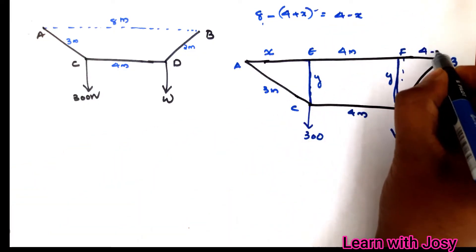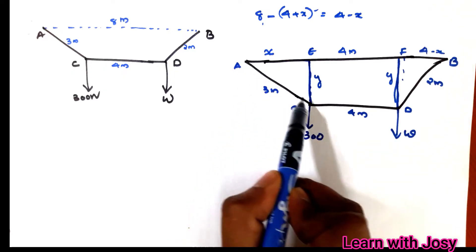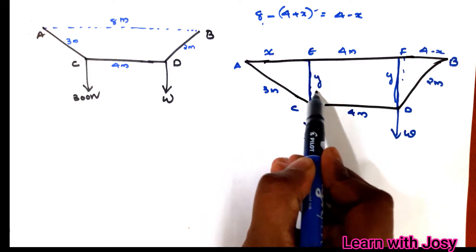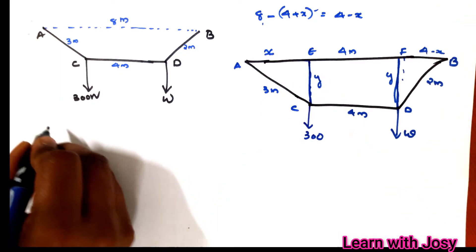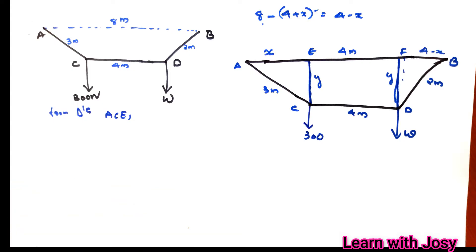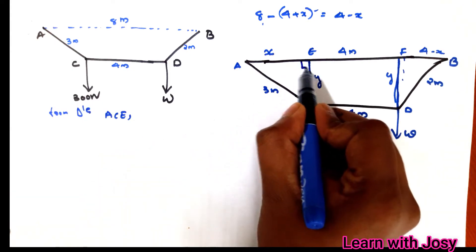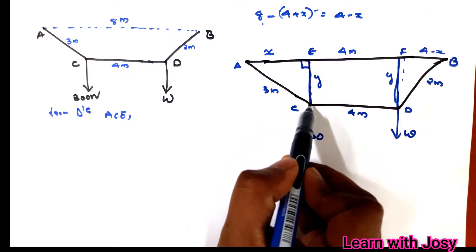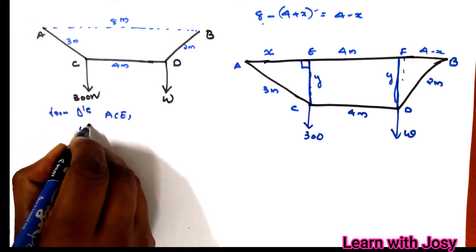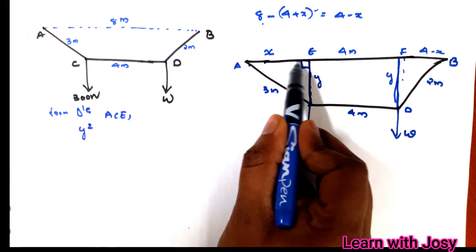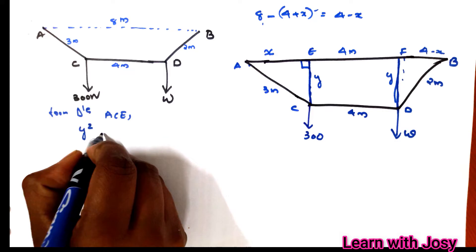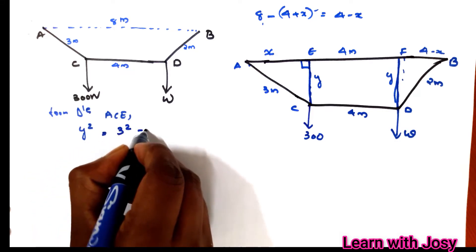Now, if you have the distance FB, you have a triangle. This triangle has a y value. The triangle with CE is a right-angle triangle, 90 degrees. Using the Pythagorean theorem, y-squared is equal to 3-squared minus x-squared.